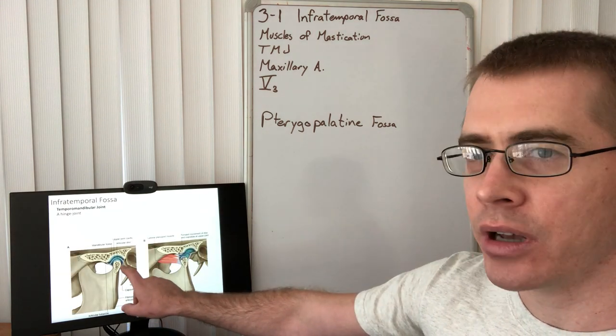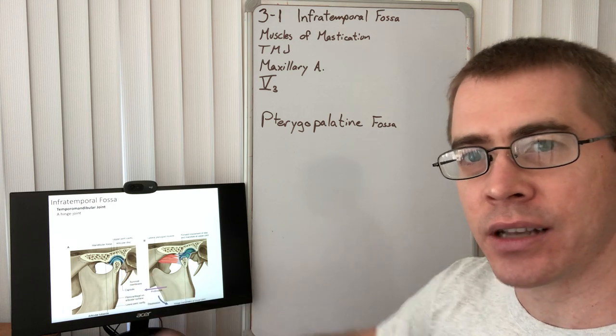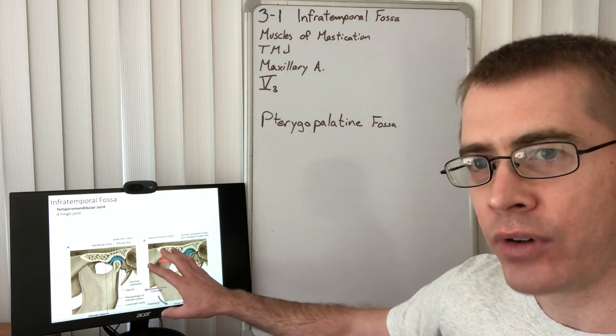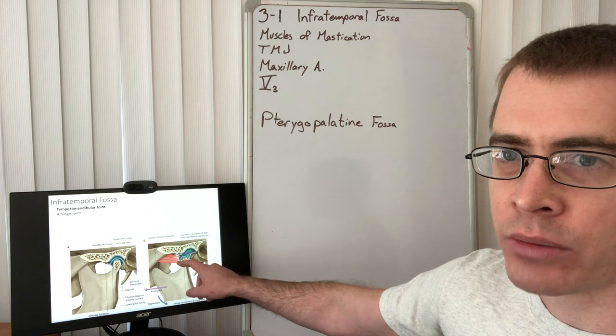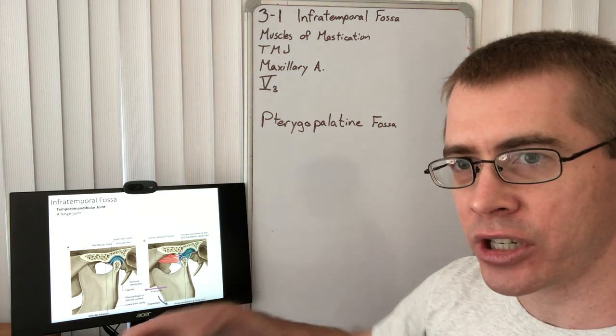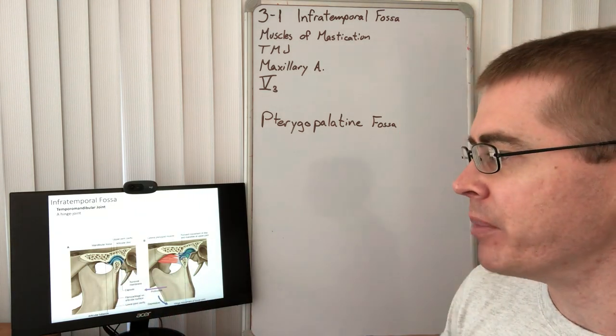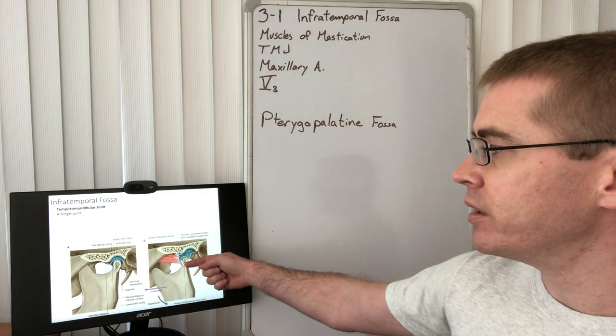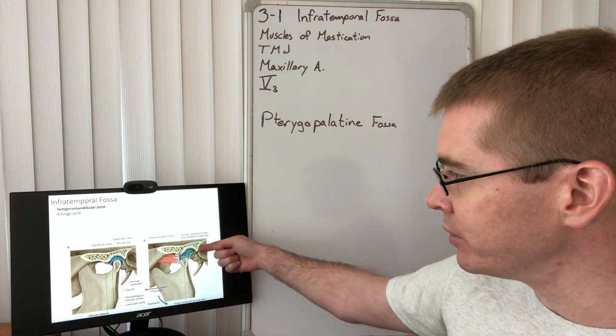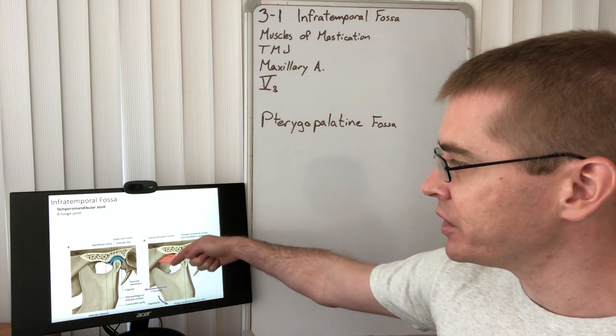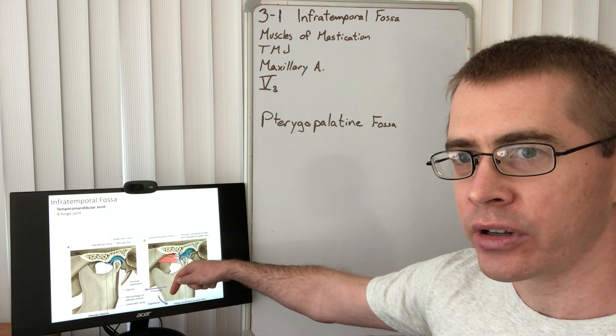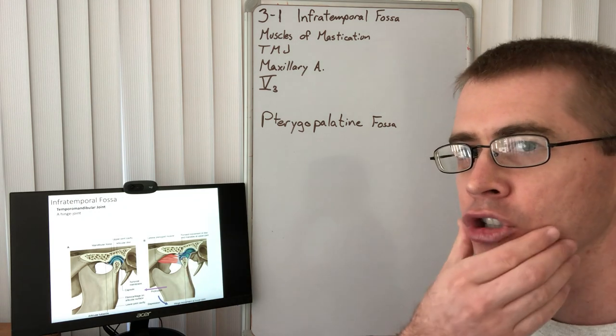Something interesting about the temporomandibular joint or TMJ is that it is a synovial joint which contains an articular disc within it. In the process of opening the jaw, the lateral pterygoid muscle is actually pulling the jaw forward, basically in a way disarticulating the condyle of the mandible. In this process, the condyle of the mandible encounters this articular tubercle of the zygomatic bone and as such causes this hinging action. The mandible actually has to hinge down during this process and that's what causes the jaw to open.